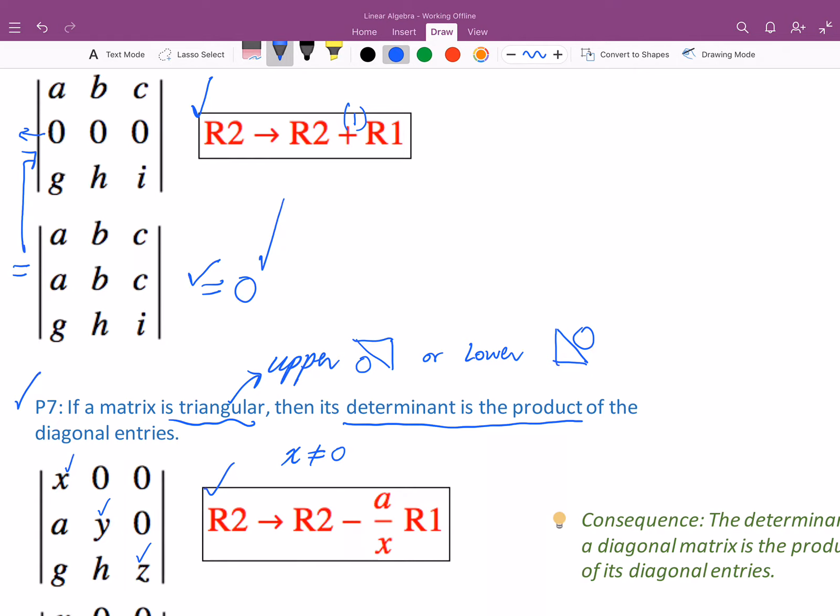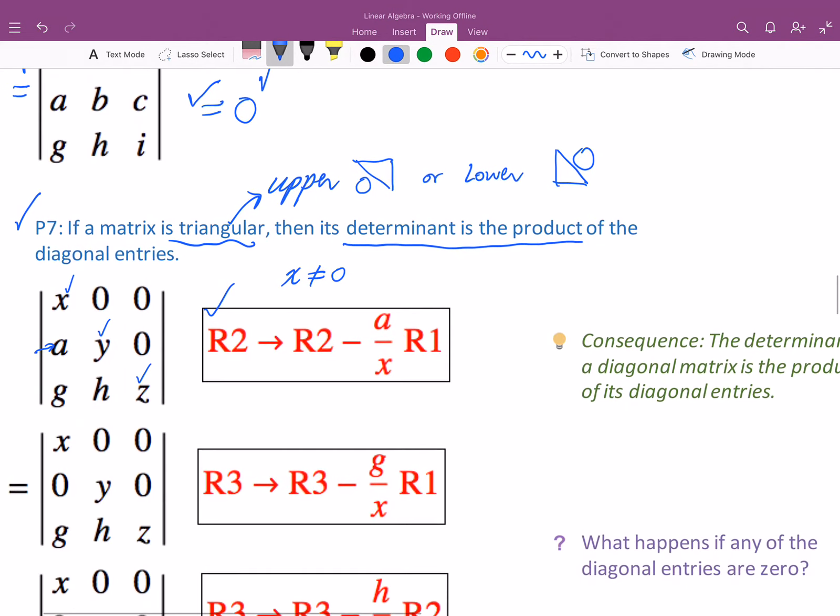What we're going to do is we're going to do this row operation. We're going to replace row 2 to row 2 minus a over x row 1, and what that's going to do is that's going to turn the a into a 0. So we're doing elimination, and when you do that, you turn that entry into a 0.